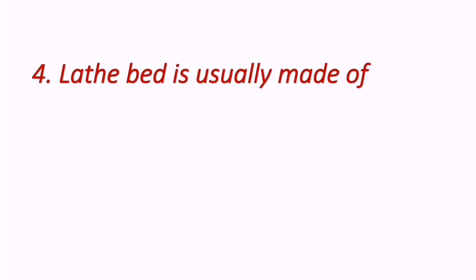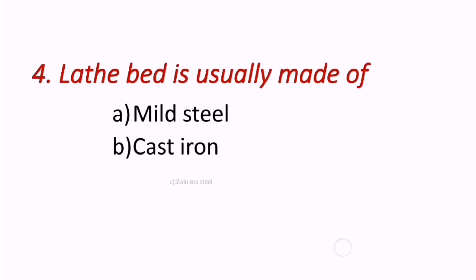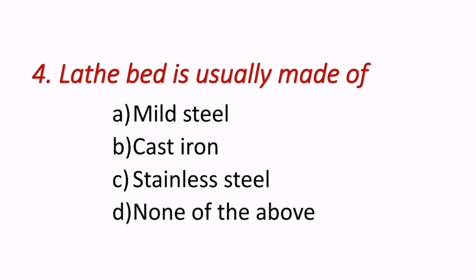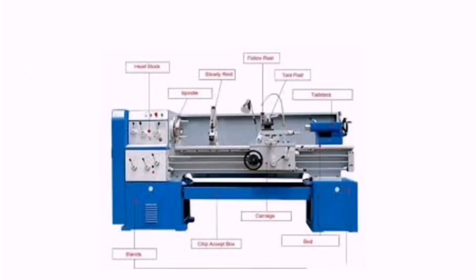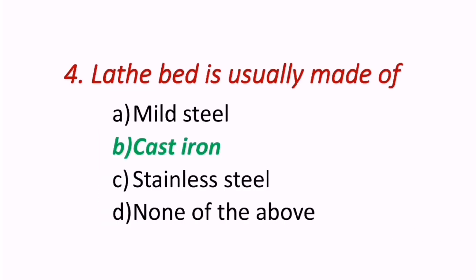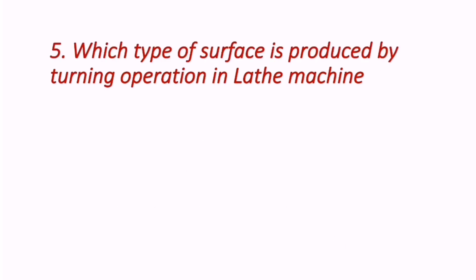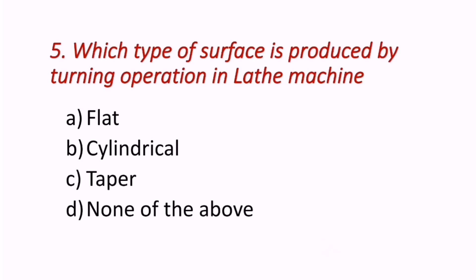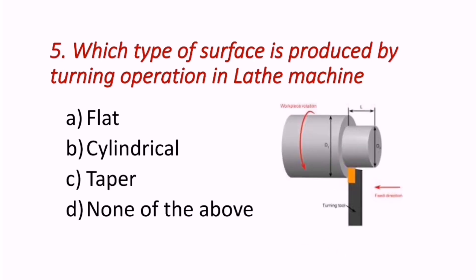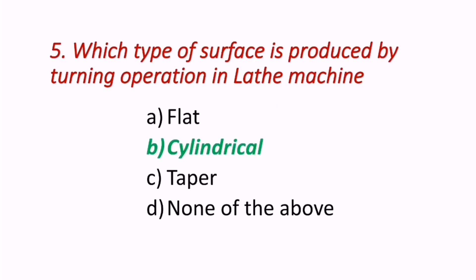Fourth question: Lathe bed is usually made up of? Looking at the parts of the lathe machine, the base is at the bottom. The correct answer is B — cast iron. The lathe bed is usually made of cast iron. Fifth question: Which type of surface is produced by a turning operation in a lathe machine? The correct answer is B — cylindrical surface.